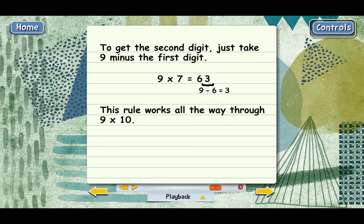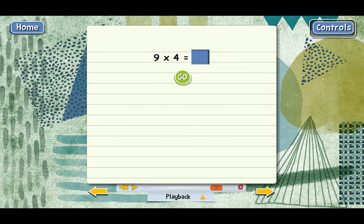Now, why don't you do one totally on your own. What's 9 times 4? Exactly right! And even if you'd forgotten this multiplication fact, you could have gotten the answer like this. The first digit has to be 4 minus 1, or 3. Then the second digit, take 9 minus 3, which is 6. So that's 36.